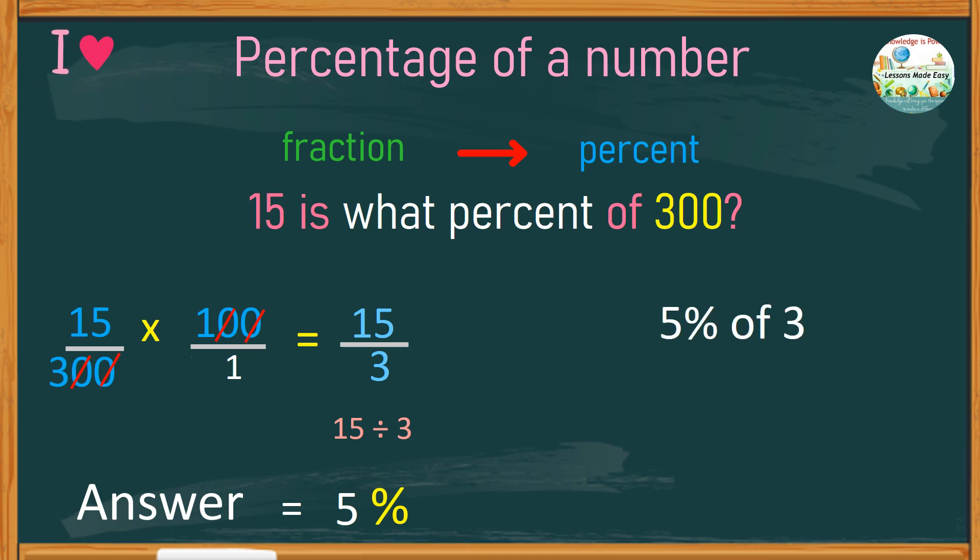We can check if our answer is correct. Let's see if 5% of 300 is 15. So, 5 over 100 times 300. Cancel the two zeros in the number above. Do the same with the two zeros in the number below. Now, we have 5 times 3, which is 15. Therefore, our answer is correct.